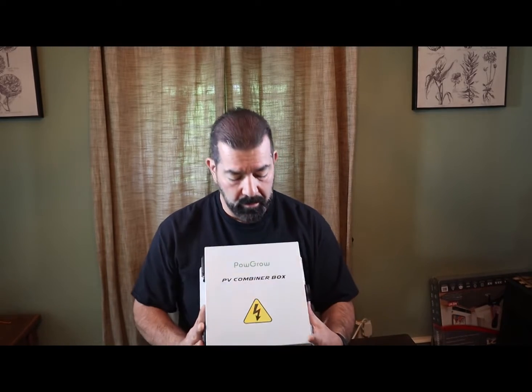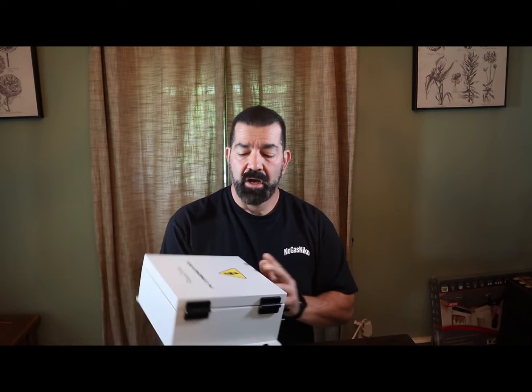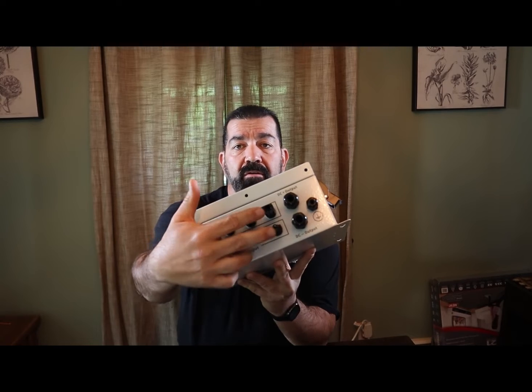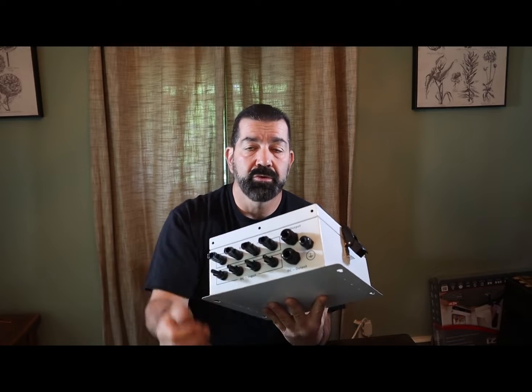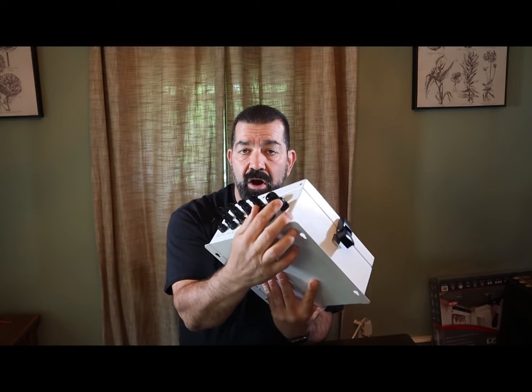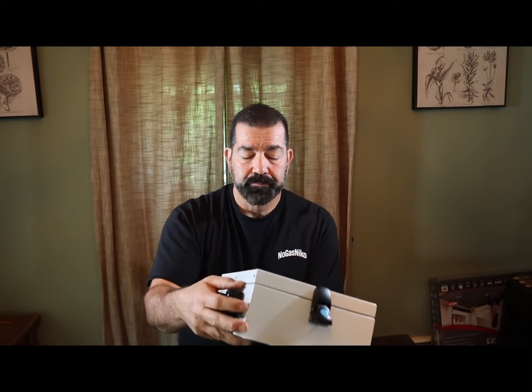So first off, I purchased this PowerGrow. It's a combiner box. Now what this does, this takes inputs from your MC4 connectors from one, two, three, four solar panels. And then we can have outputs here going plus or minus to the house. We can bury a cable. And then we have a ground. I can run a ground rod in an earth ground and connect it here. And I want to open up this box, show you the inside.